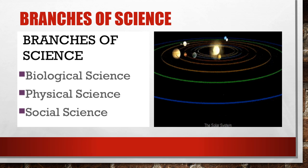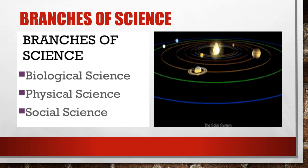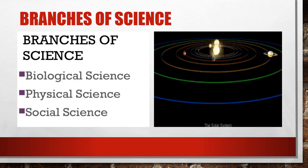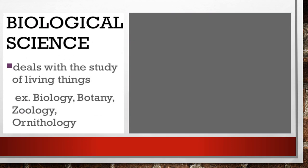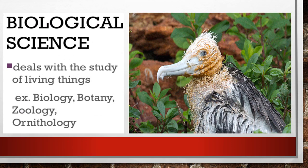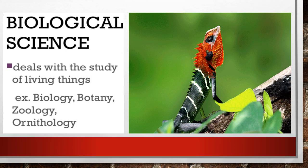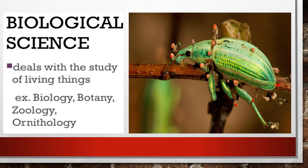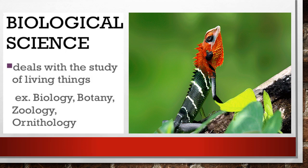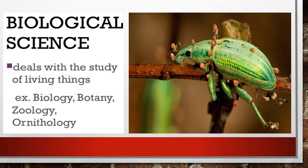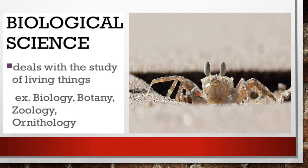There are three main branches of science: biological science, physical science, and social science. Biological science deals with the study of living things, both plants and animals. Examples include biology, botany, zoology, and ornithology.